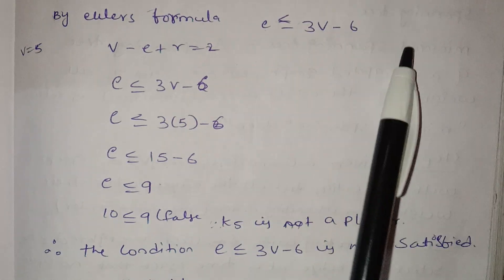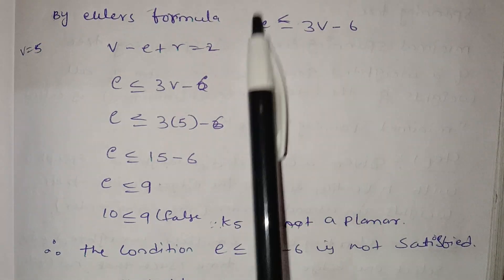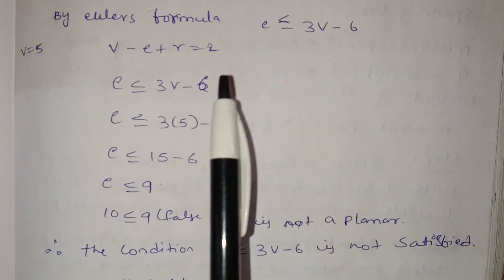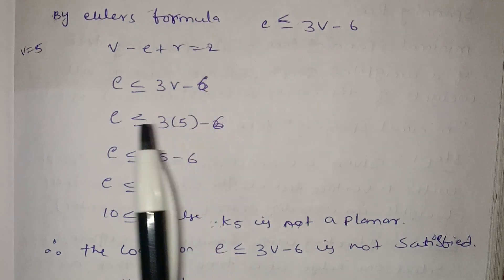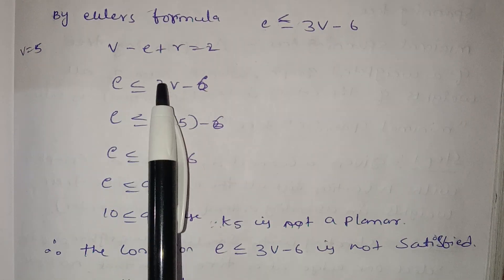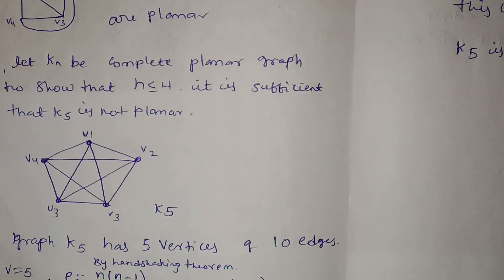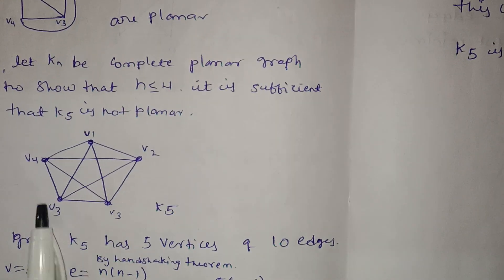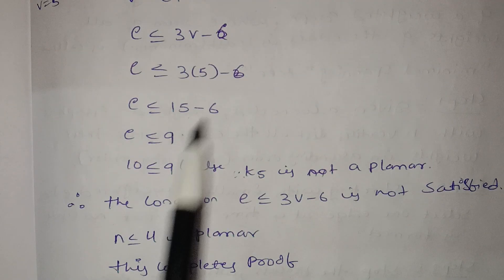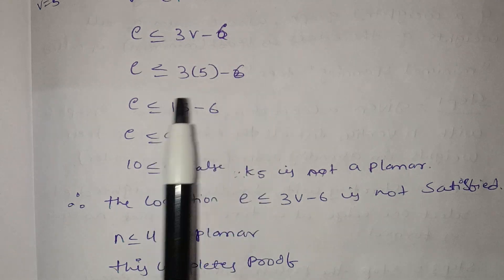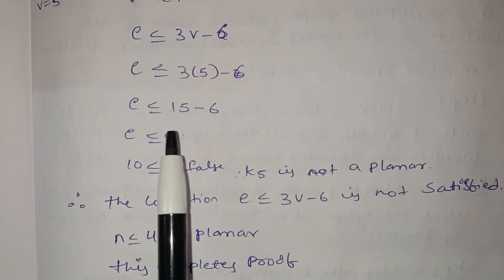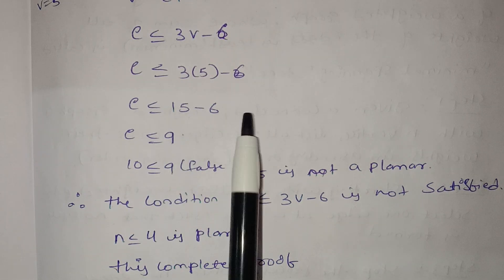We have the Euler's formula: E is less than or equal to 3V minus 6. For K5, V is 5, so 3 × 5 minus 6 = 15 minus 6 = 9. So E must be less than or equal to 9.